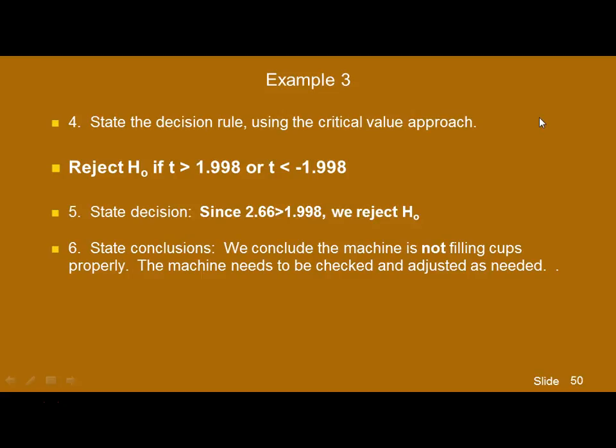We'll do both the critical value and P-value approach. Using the critical value approach with the T distribution, the critical T value is 1.998 and negative 1.998, because we reject in both ends of the distribution. We will reject the null hypothesis if we get a T value either above 1.998 or below negative 1.998. Since our calculated T was 2.66, which does lie above 1.998, we reject the null — concluding that the machine is not filling cups properly and needs to be checked and adjusted.